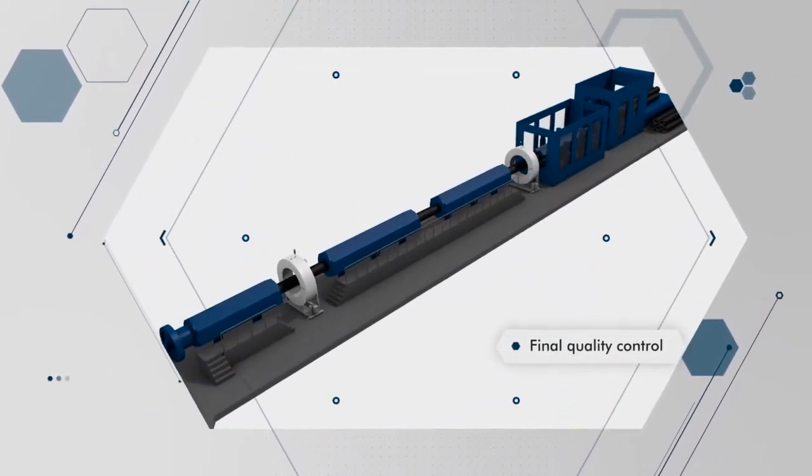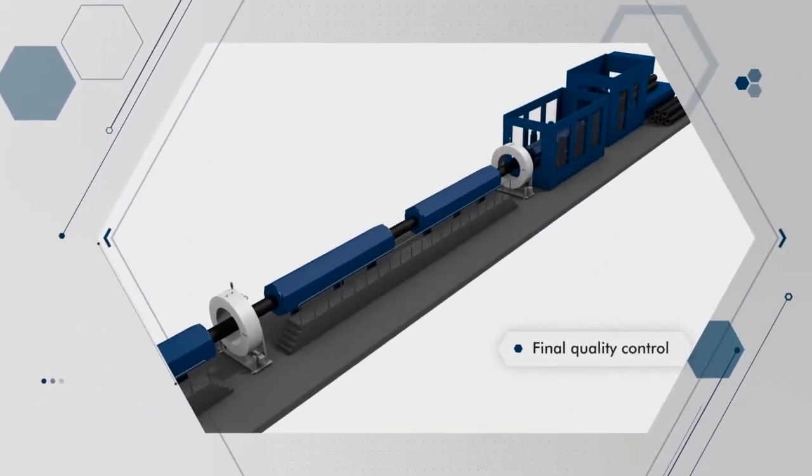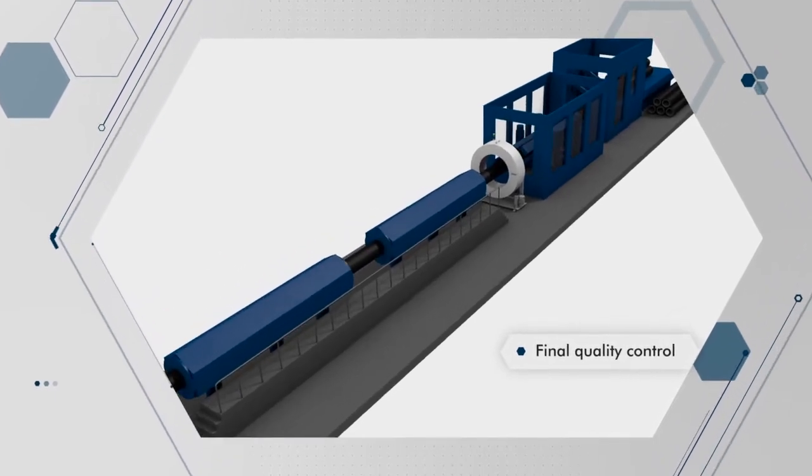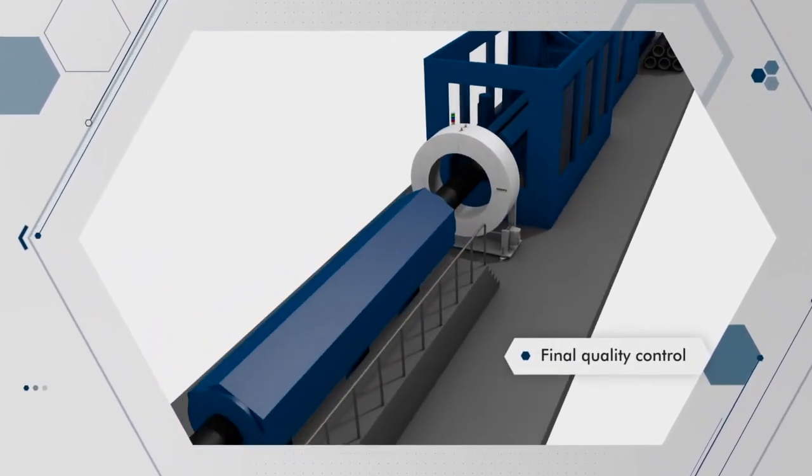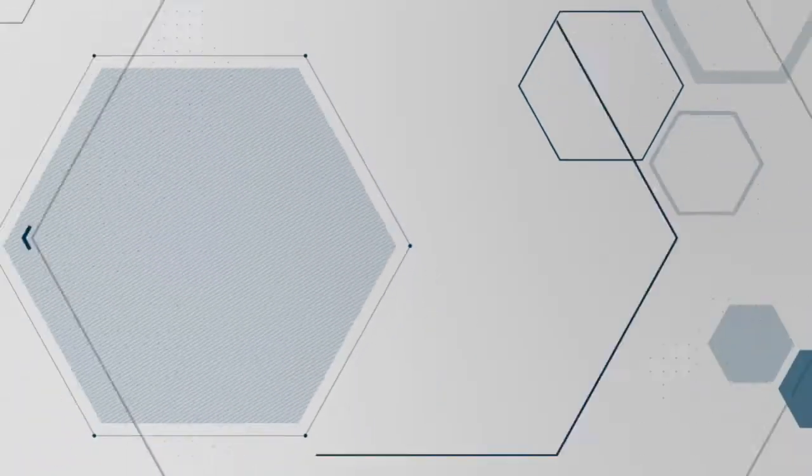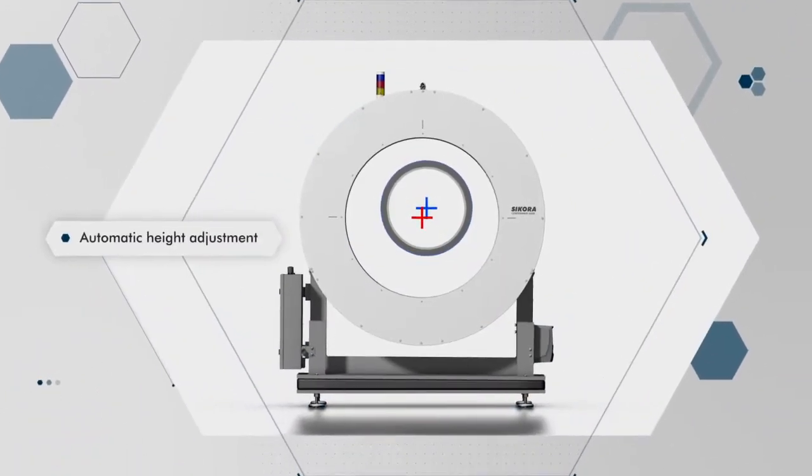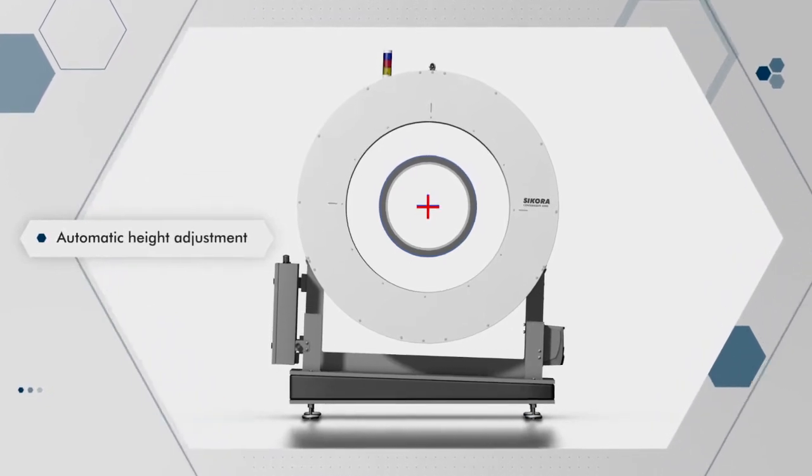At the end of the line, the system is used for final quality control. The extremely slender design enables easy integration into the line. The automatic height adjustment ensures optimal alignment of the system to the center of the pipe.